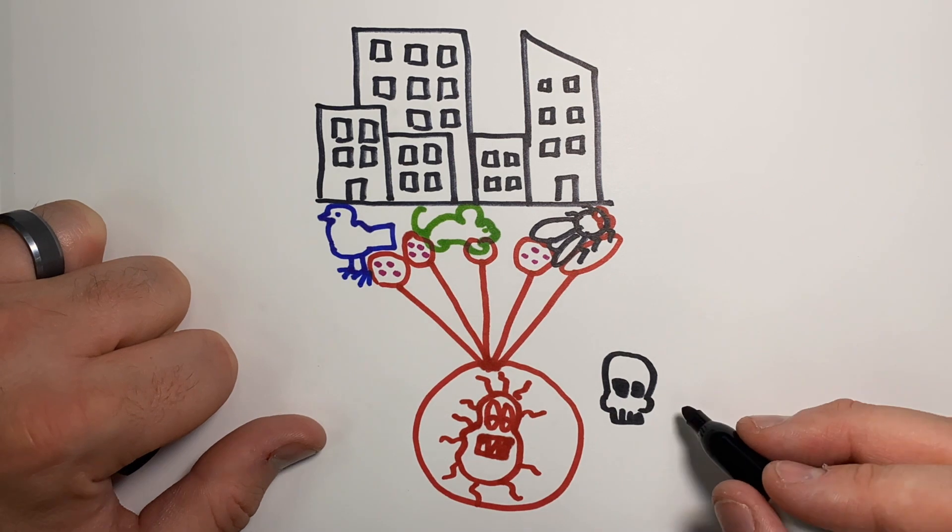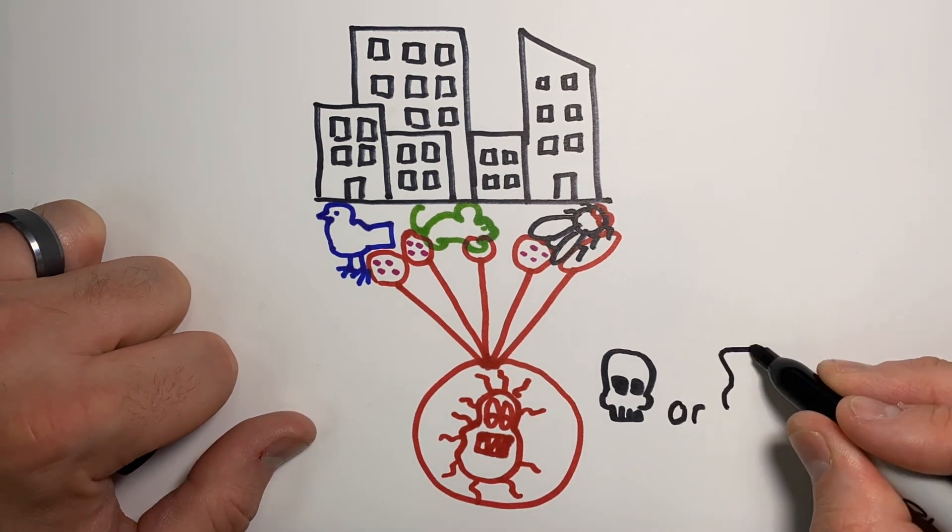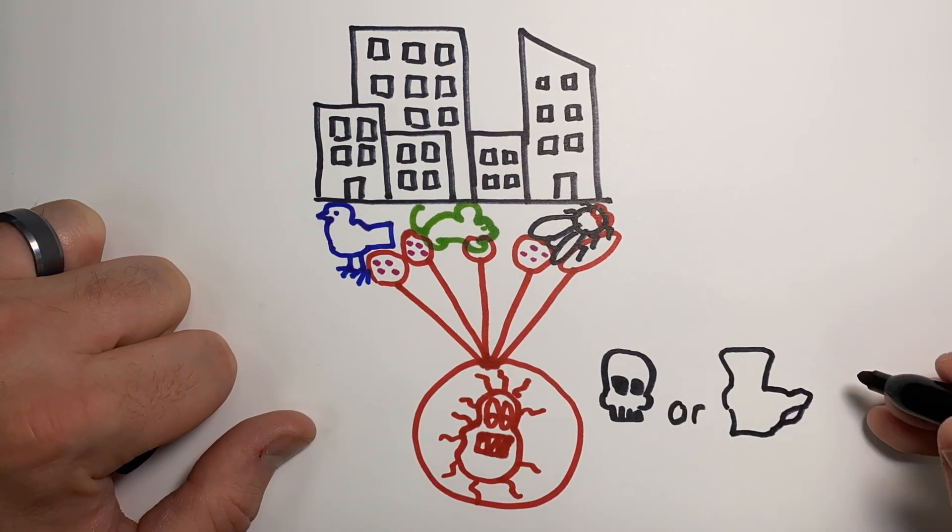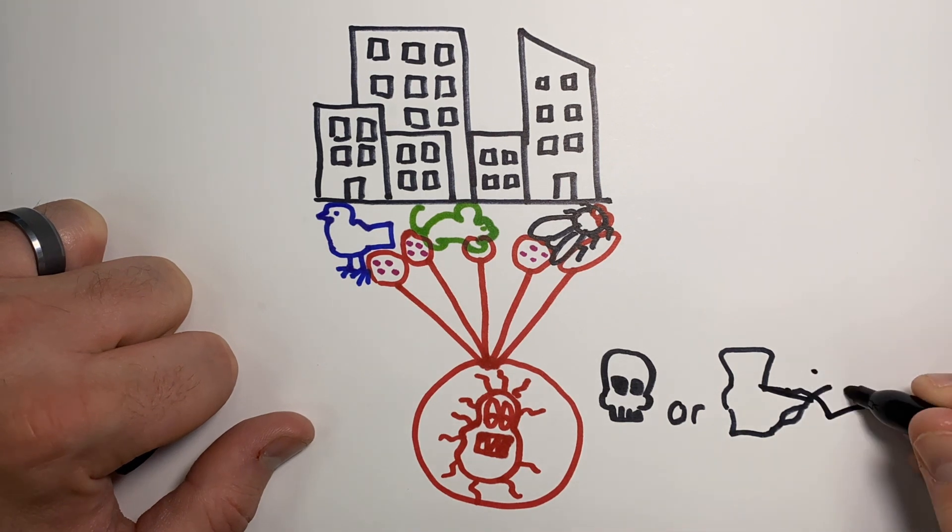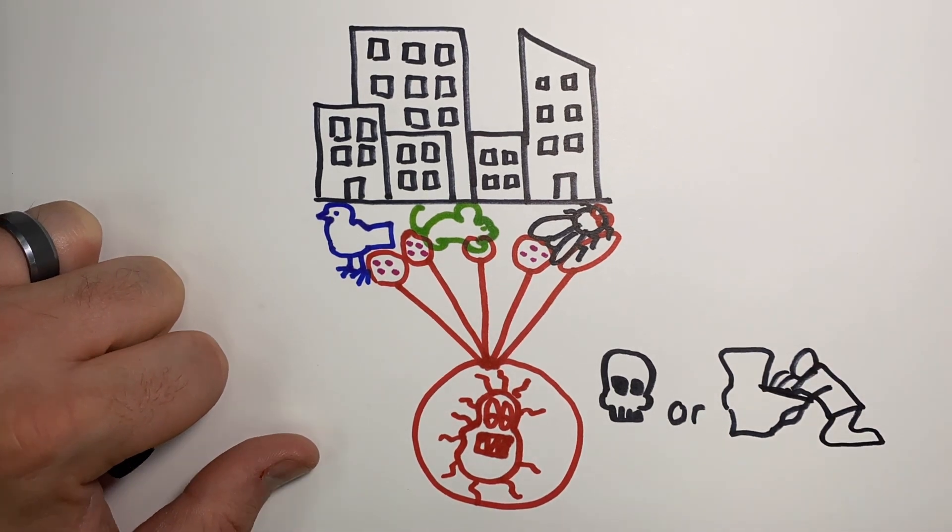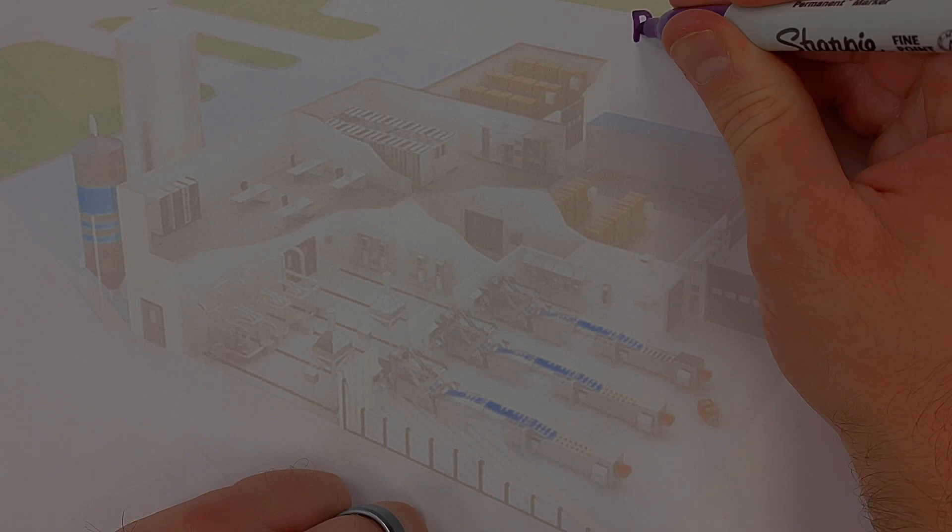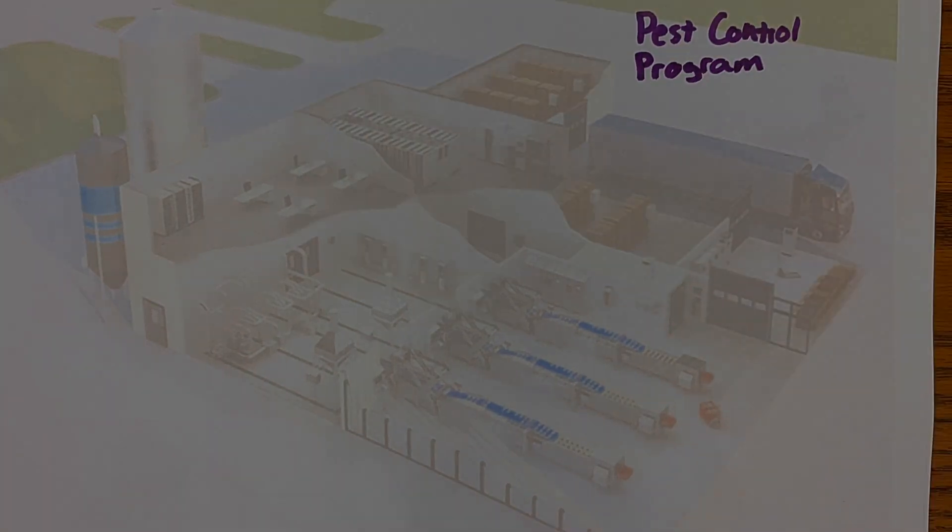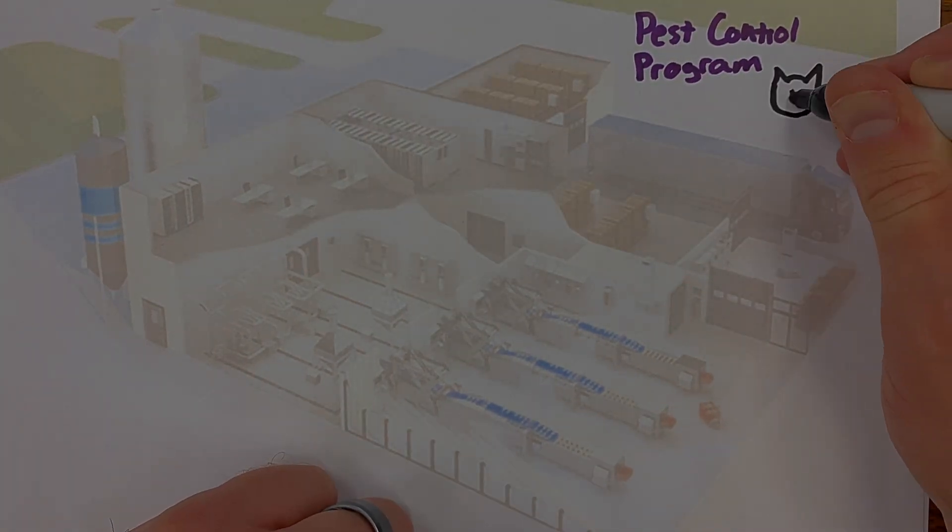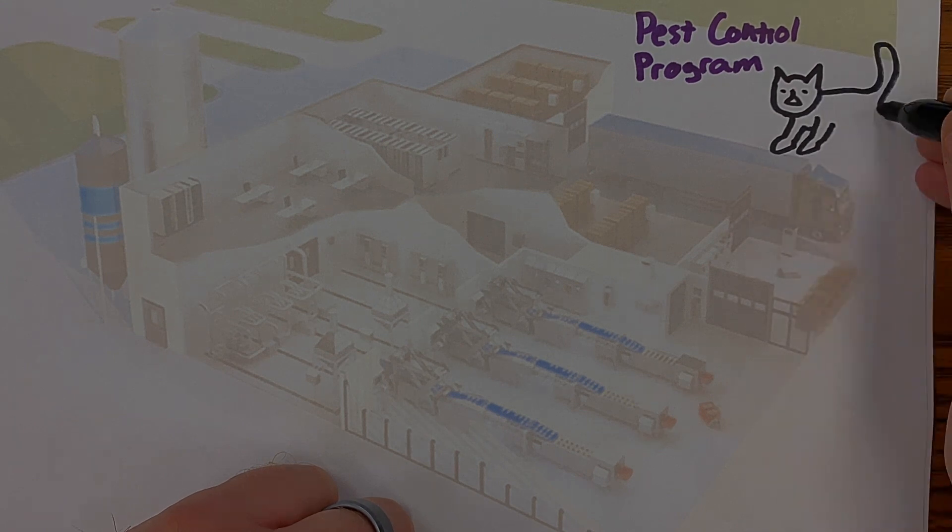Safe to say, we don't want these critters anywhere near our food because they might be carrying a deadly pathogen or one that's going to make your customers very sick. Okay, we know pests are bad. What are we going to do about it? Are we going to bring in our cat Sprinkles from home to manage the pest control program?